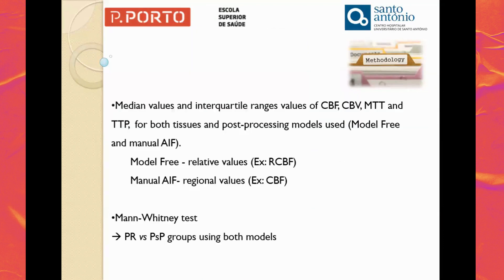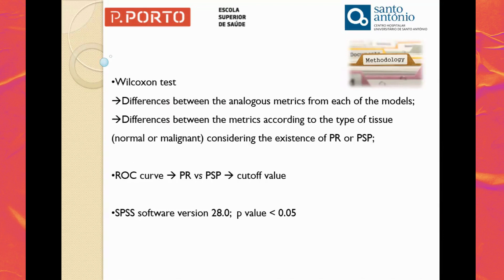The statistical analysis was performed for each metric under study for the lesion and the normal tissue for both models. We evaluated differences between progression and pseudo-progression groups using the different models, differences between the analogous metrics of each model, and differences between metrics according to tissue type — normal or malignant. We calculated ROC curves and analyzed the area under the curve and defined an optimal cutoff.